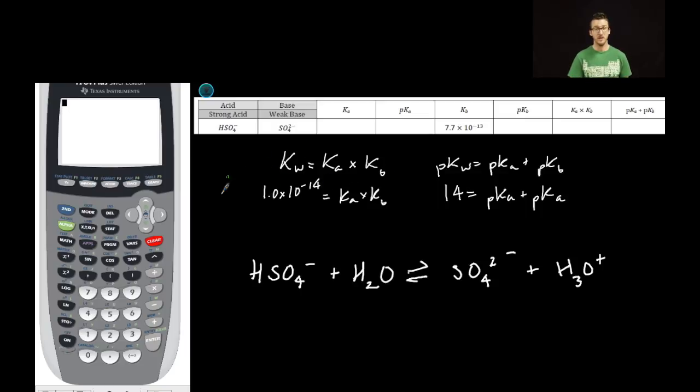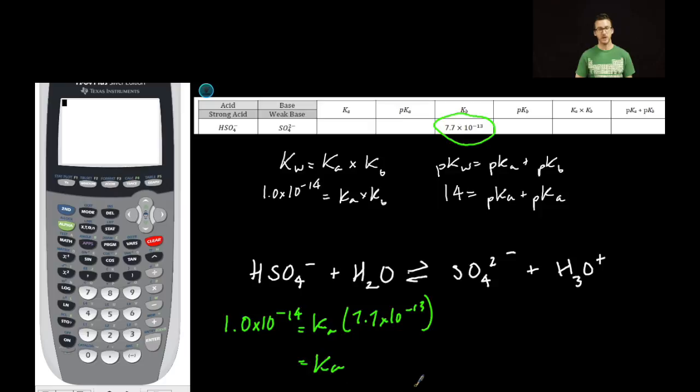I'm going to start with this relationship here. We're going to assume 25 degrees Celsius, so Kw is equal to 1.0 times 10 to the minus 14. I'm looking for Ka, and I'm told that the Kb value for the conjugate base is 7.7 times 10 to the minus 13. I can then solve for Ka simply using a quick division. 1.0, second E, negative 14, close parentheses, divided by 7.7, second E, negative 13, close parentheses, answer.